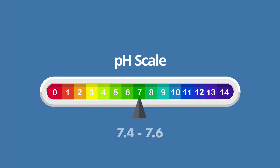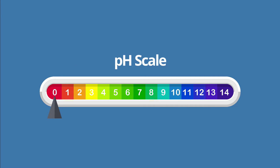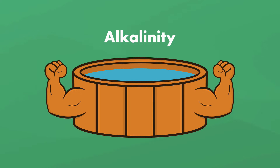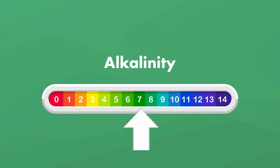Hot tub pH is volatile — any little thing that interacts with your water can drastically change the pH. And that's where alkalinity comes in. It's like pH's bodyguard. In the right amount, alkalinity will take the hit first before anything drastically affects your pH. So without alkalinity, the pH reading would be all over the place.